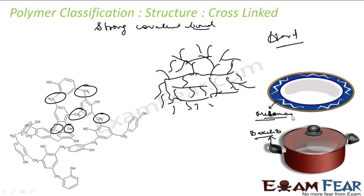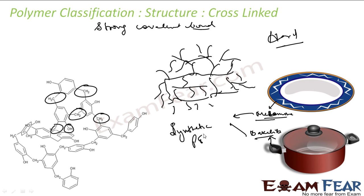If you talk about the source of cross-linked polymers, based on the source perspective, melamine and bakelite are both synthetic polymers.